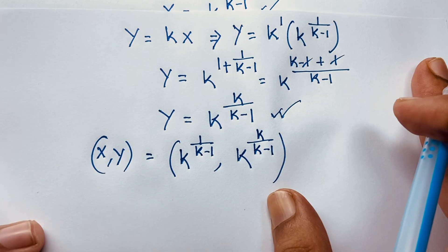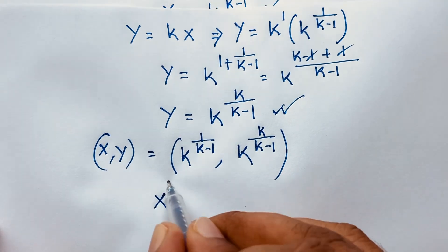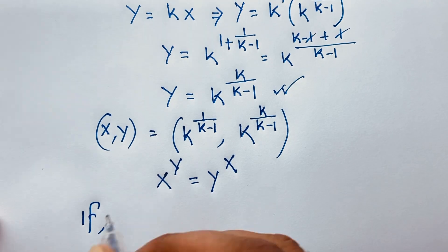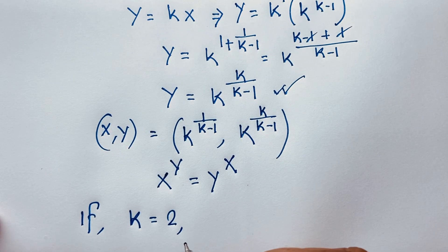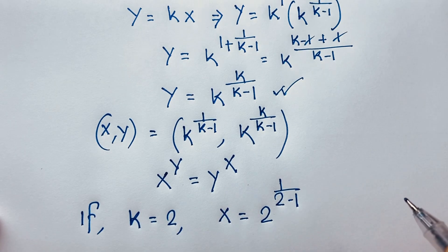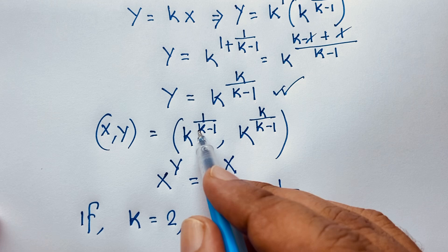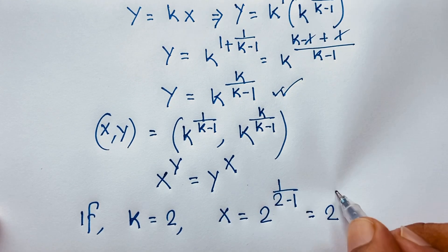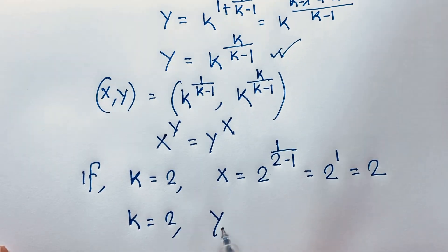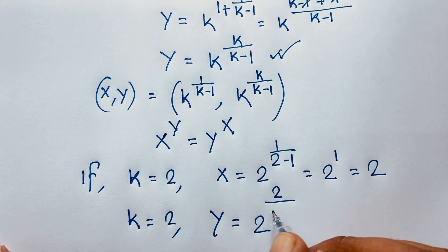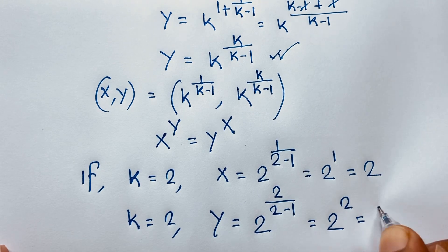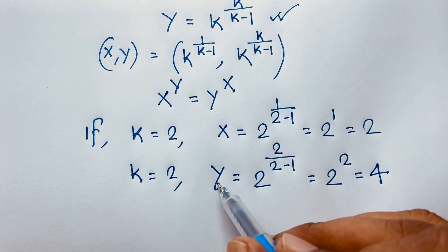Let's verify our answer. Our question is x to the power y equals y to the power x. If we let k equal to 2, then x equals 2 to the power 1 over 2 minus 1, which is 2 to the power 1, so x equals 2. And y equals 2 to the power 2 over 2 minus 1, which is 2 to the power 2, so y equals 4.